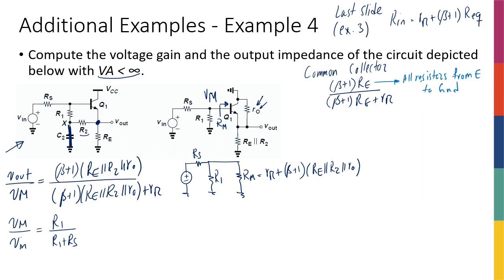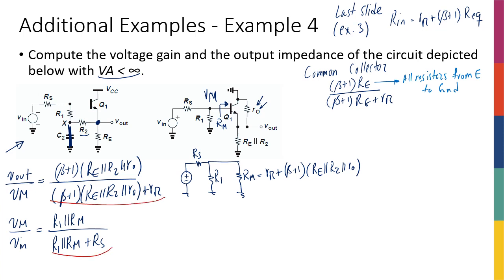Therefore, V_m over V_in is not R1 over (R1 + Rs) — it's (R1 || R_m) over (R1 || R_m) + Rs. And V_out over V_in is just the product of that fraction times the V_out/V_m fraction.